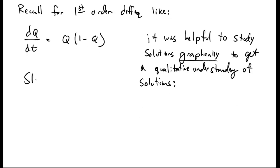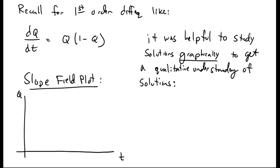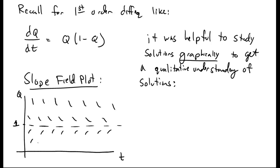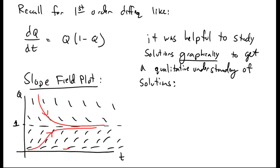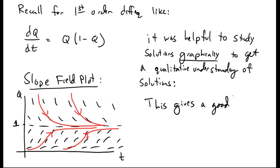For this differential equation, we draw the slope field, and it looks something like this, where we have an equilibrium solution at 1, and solutions decay towards that from above and below. There's also an equilibrium solution at 0. Solutions from the top will come down, and solutions from the bottom will come up. This is a very useful technique because it gives us a good intuition and qualitative understanding of what solutions look like.